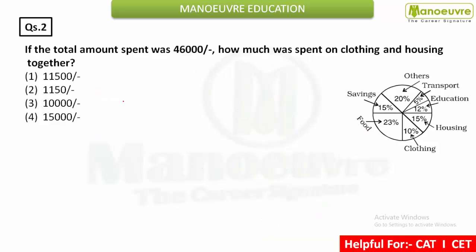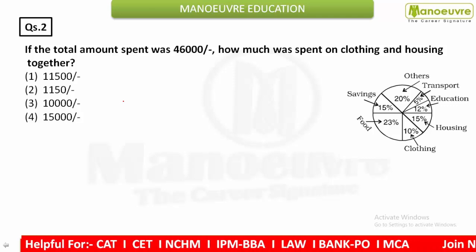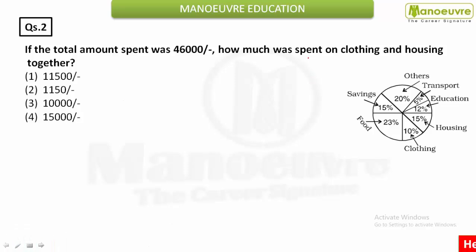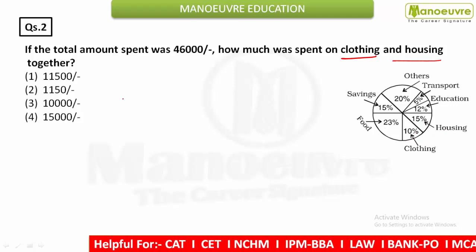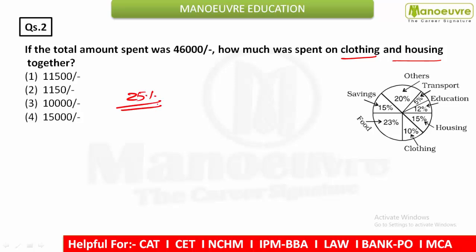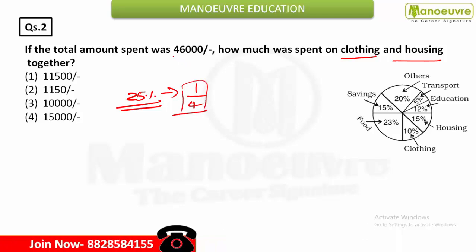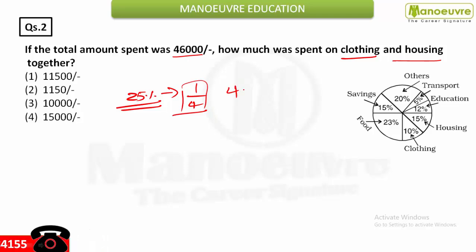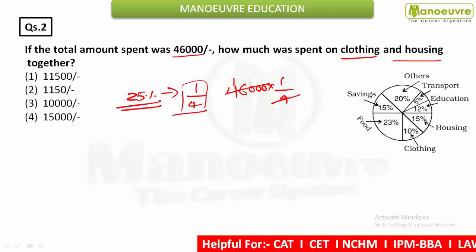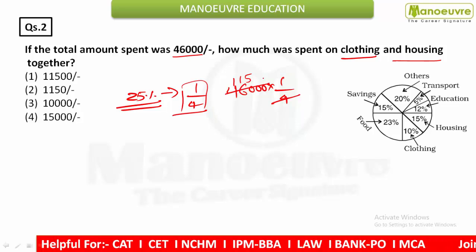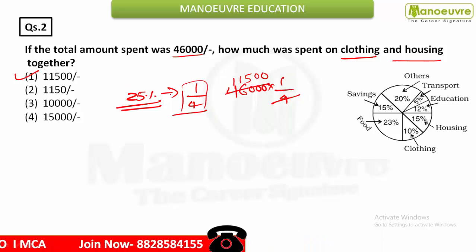Next question: if the total amount spent was 46,000, how much was spent on clothing and housing together? Add clothing (15%) and housing (10%), which gives 25%. In fraction terms, 25% is 1/4. So just find 1/4 of 46,000, which equals 11,500. That is option 1.